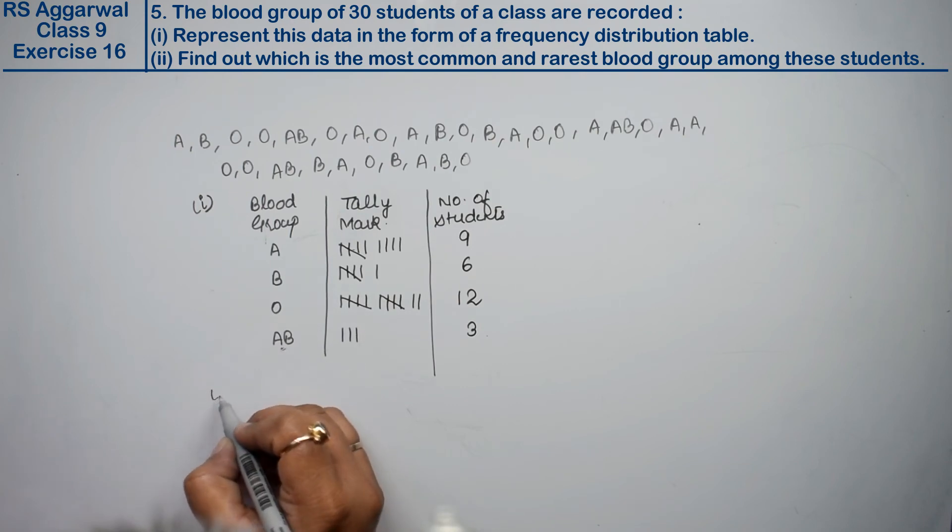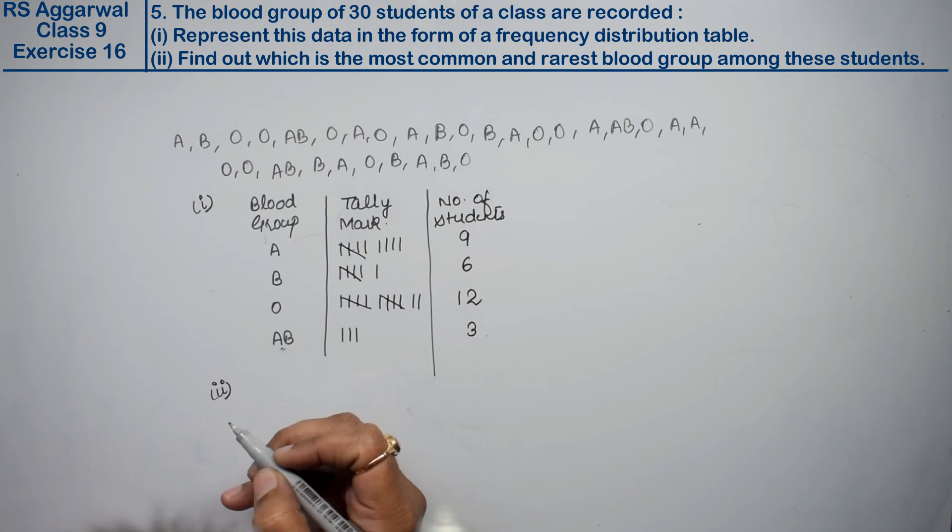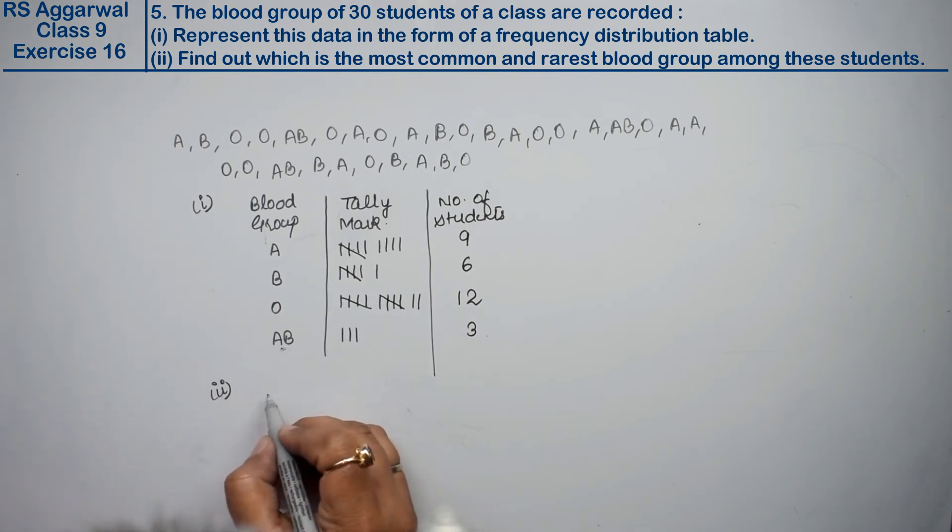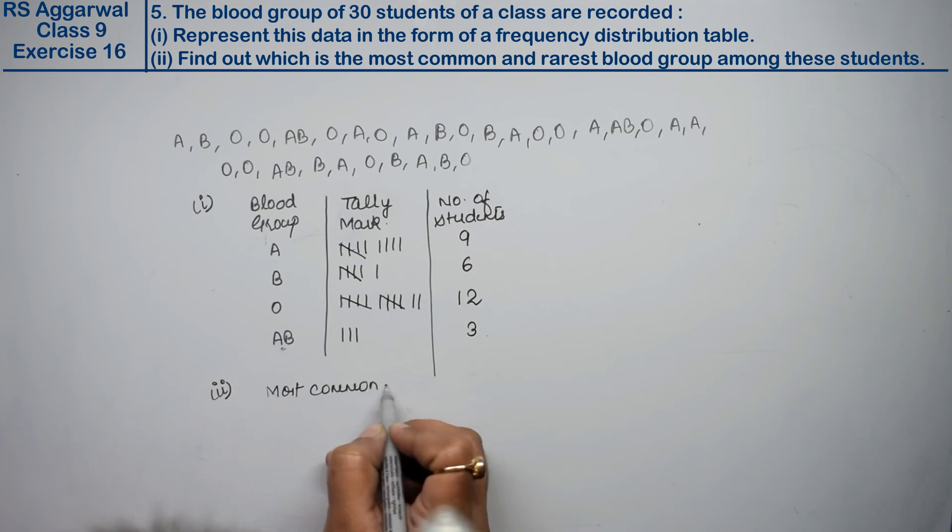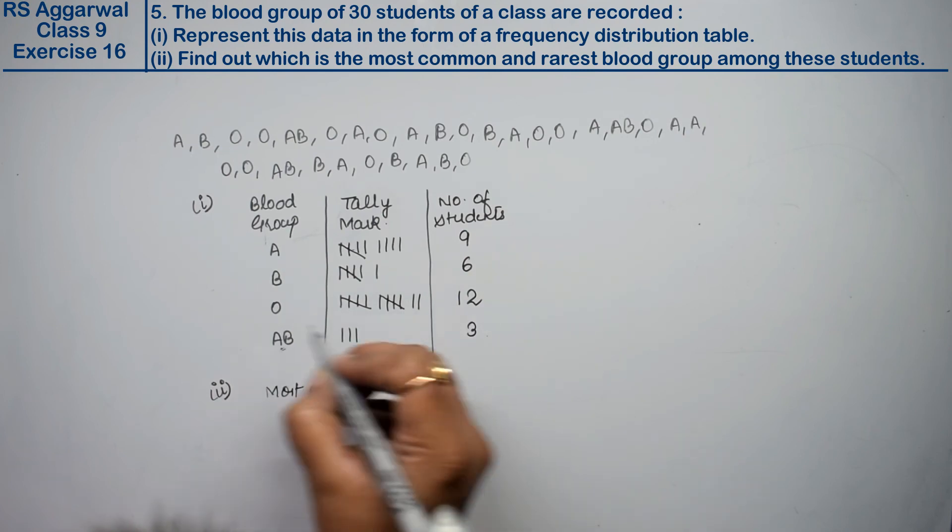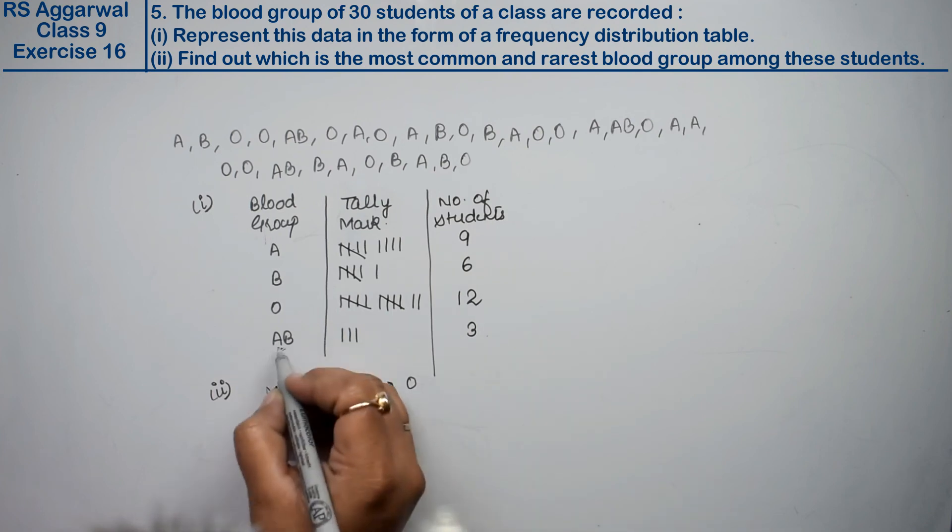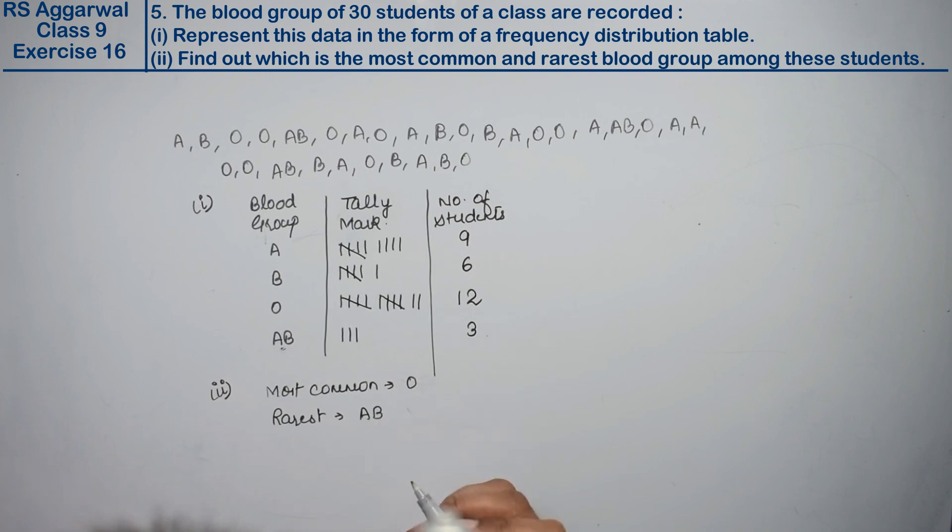What is the second part? Let's see. In the second part, find out which is the most common and which is the rarest blood group among these students. Most common means the most used, and rarest means the least used. Most common is O with 12. What is the rarest? AB is 3. AB is the answer of second part.